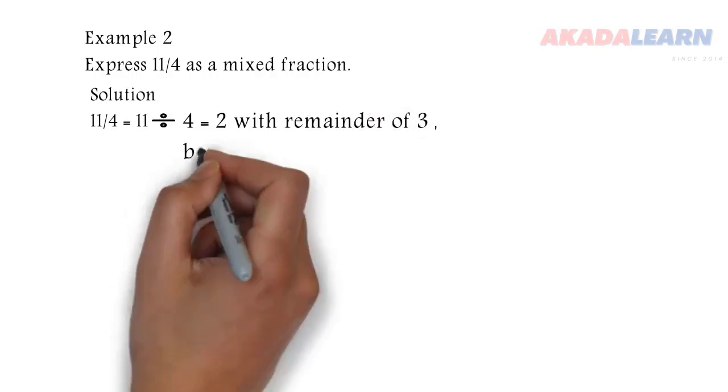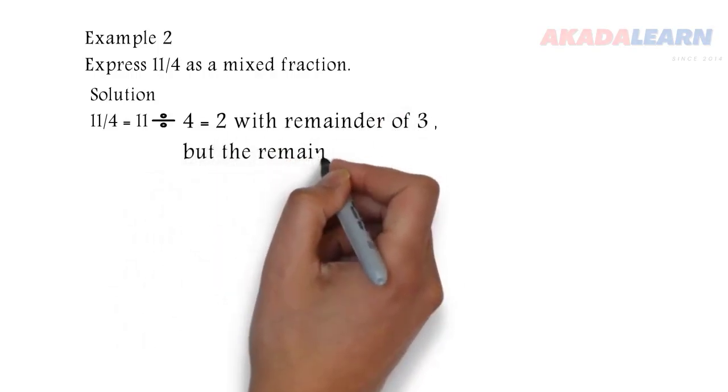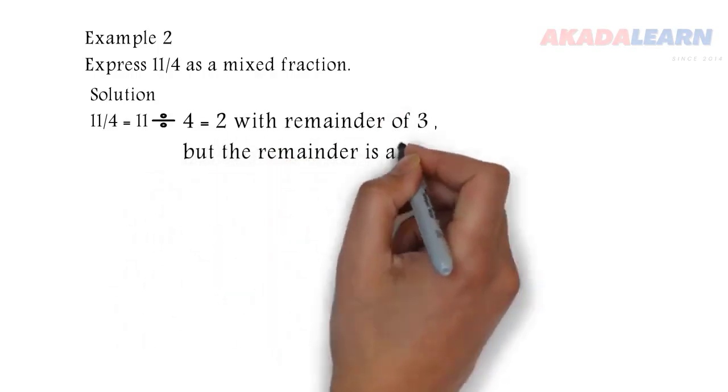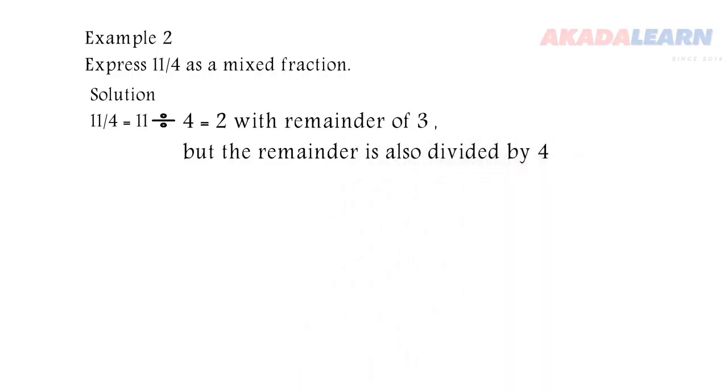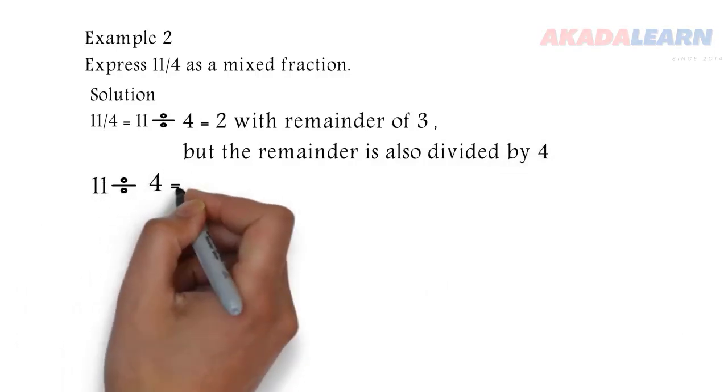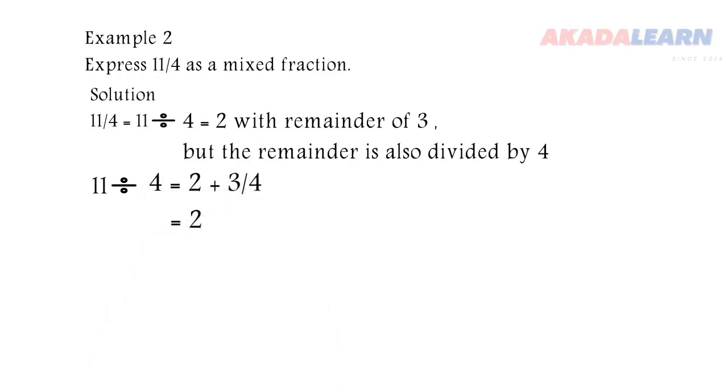But there's a remainder, which is three. And that remainder is also going to be divided by four. Now, let's see how to finalize that. We have 11 divided by four. It's the same thing as two whole number, then plus three over four. And when we bring that together, we have two whole number, three over four.